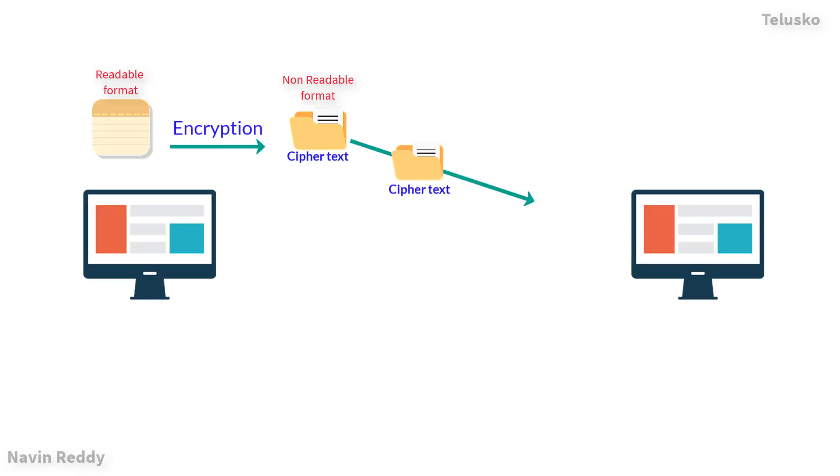Then this unreadable format, the ciphertext, will go to the receiver end, let's say B. B will be able to see that, but unfortunately the moment you encrypt a message, you can read it only when you decrypt it. That means if you want to read the message, you have to decrypt it.